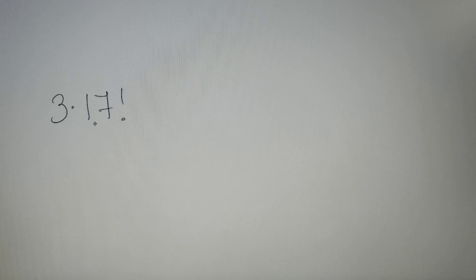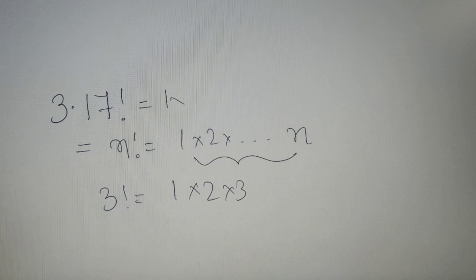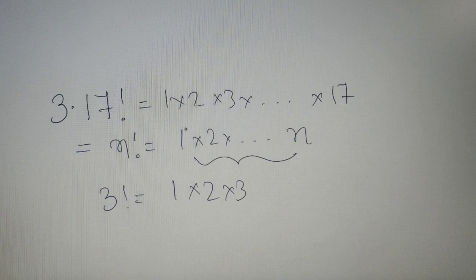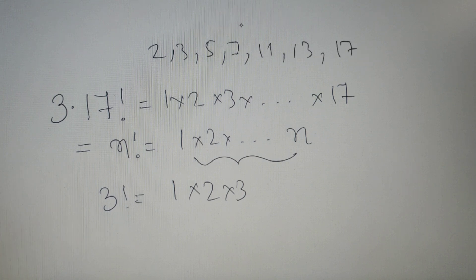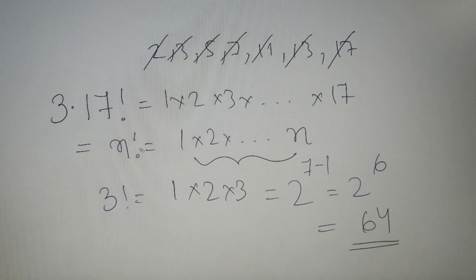Moving on to our third question, we have to find the number of ways 17 factorial can be represented as a product of two co-primes. The factorial of a number gives the product of all natural numbers from 1 up to n, so 17! = 1×2×3×…×17. We need to find how many prime numbers exist from 1 to 17. Those primes are 2, 3, 5, 7, 11, 13, and 17 — giving us 7 prime factors in total. Applying the formula: 2^(7−1) = 2⁶ = 64. So 17! can be written as a product of two co-prime numbers in 64 ways.